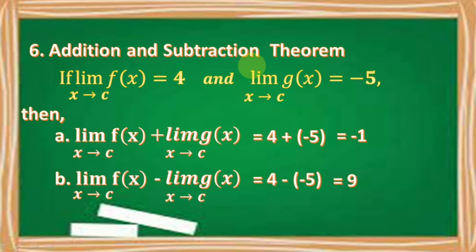Given that the limit of f of x as x approaches c equals 4 and the limit of g of x as x approaches c equals negative 5. Letter A: The limit of f of x as x approaches c equals 4 plus negative 5, and 4 plus negative 5 is equal to negative 1.